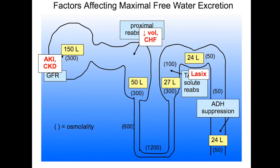Or if you can't suppress ADH secretion. This means that you will reabsorb water in the collecting tubule, and the dilute tubular fluid won't have a chance to turn into dilute urine. This happens with ADH secretion in volume depletion, because here intravascular volume is being protected by reabsorbing water even at the expense of developing hyponatremia. It also happens in the syndrome of inappropriate ADH associated with lung tumors, et cetera.